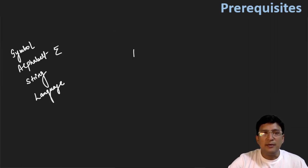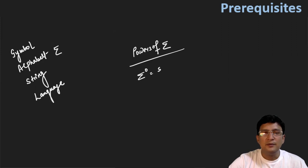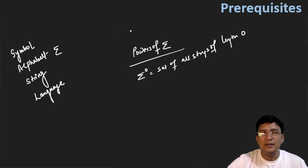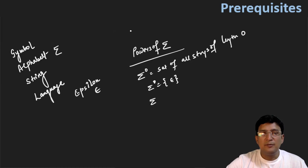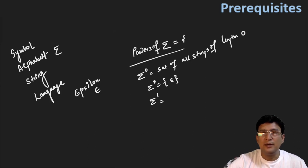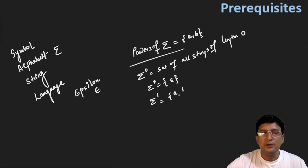Now let us talk about powers of sigma. What is the meaning of powers of sigma? If we talk about sigma power zero, its meaning is: set of all strings of length zero. So which string can be of zero length? There is only one such string, and that is epsilon. We will denote it as epsilon. Now, sigma power one means set of all strings of length one. If our sigma denotes {a, b}, then the single length strings will be a and b.